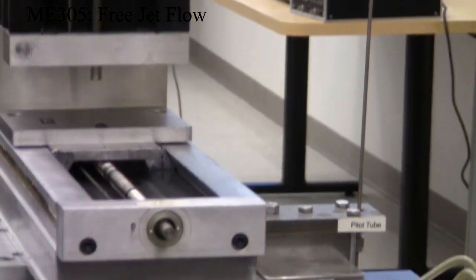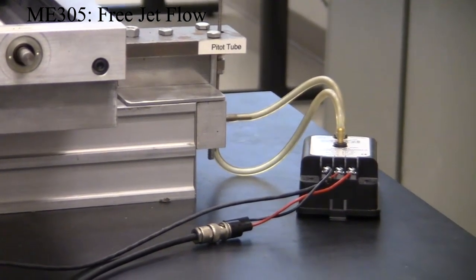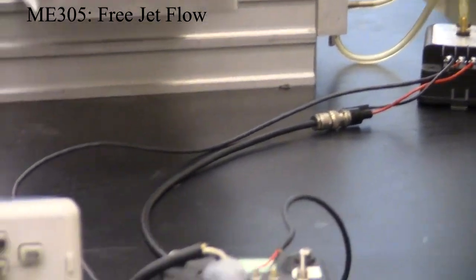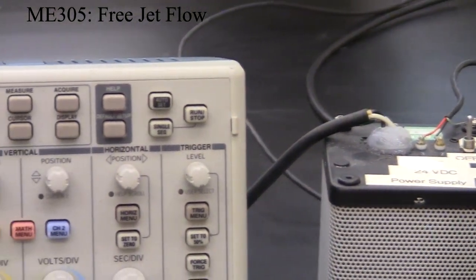The pressure across the pitot tube is measured with a transducer and there's the power supply for the transducer which we would like to turn on.